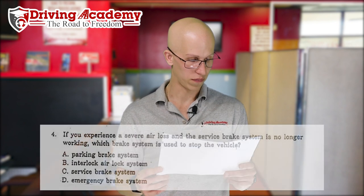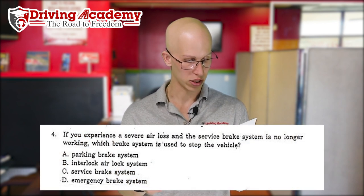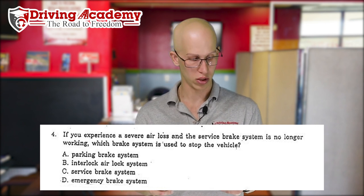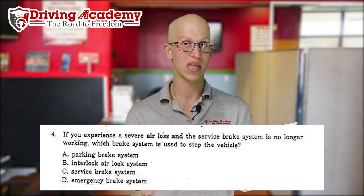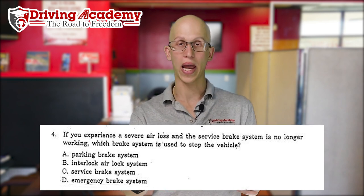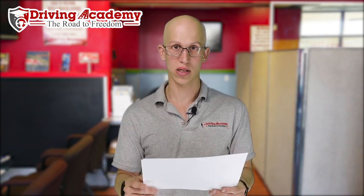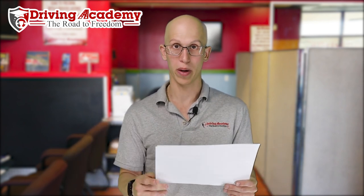Question number four: if you experience a severe air loss and the service line system is no longer working, which brake system is used to stop the vehicle? The correct answer is the emergency brake system. When all the air escapes and you have no air, the springs will automatically pop up and the emergency system will engage, meaning you cannot move the vehicle until you get air back into the system — you'll have to fix that hose or leak so the air compressor can pump air back in.